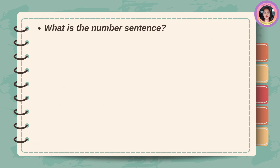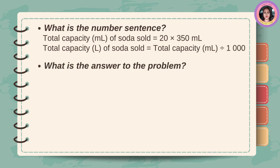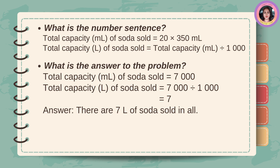Number sentence: Total capacity in milliliters of soda sold equals 20 times 350 milliliters. Total capacity in liters of soda sold equals total capacity in milliliters divided by 1,000. Answer: Total capacity in milliliters equals 7,000. Total capacity in liters equals 7,000 divided by 1,000 equals 7. There are 7 liters of soda sold in all.